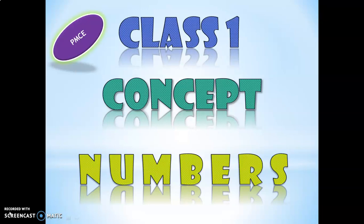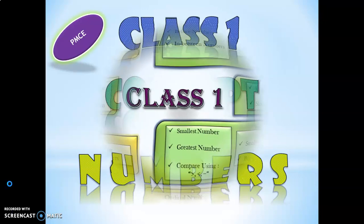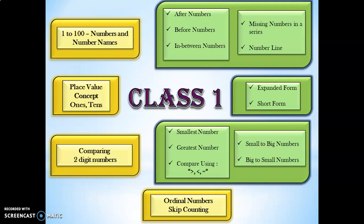In this video, we will be evaluating the learning outcome of children in class 1 with respect to concept numbers. The learning outcomes in class 1 with respect to concept numbers are: 1 to 100 numbers and number names, place value concepts, comparing two-digit numbers, and ordinal numbers and skip counting. There will be associated topics under each of these concepts.